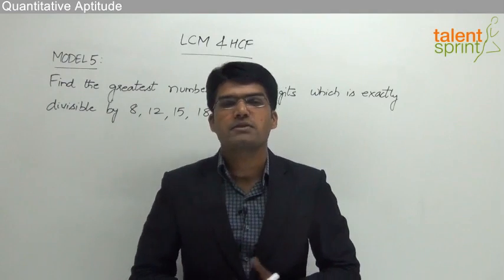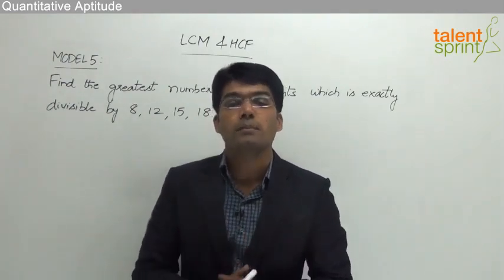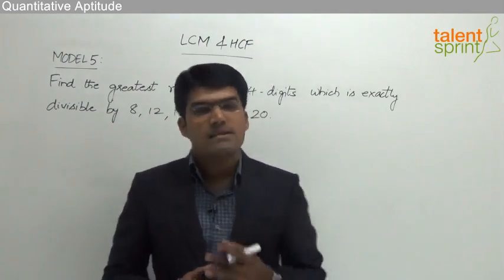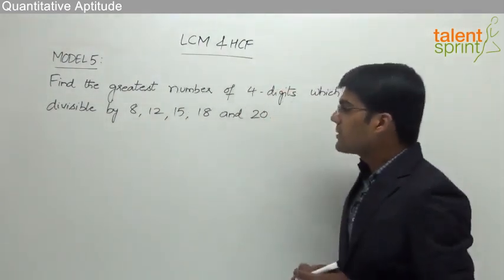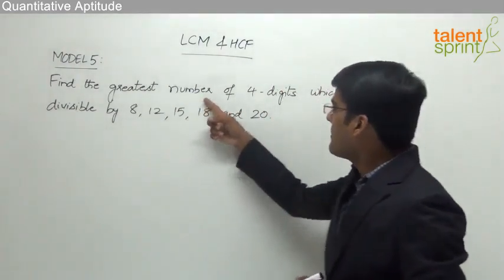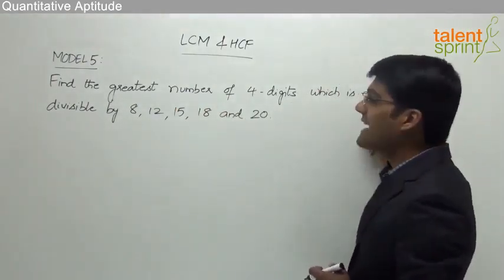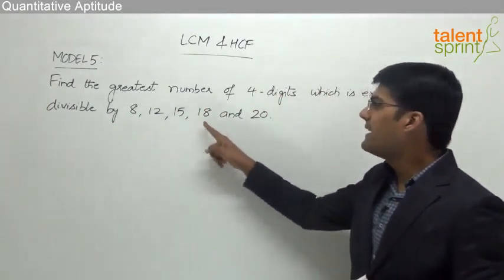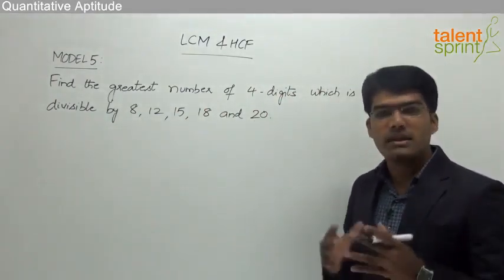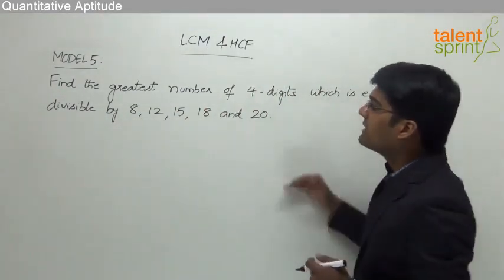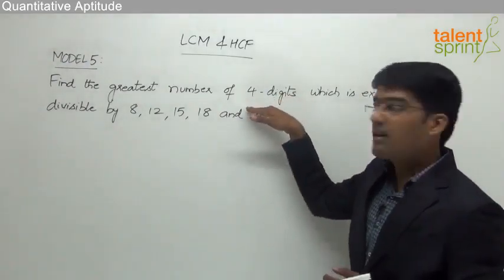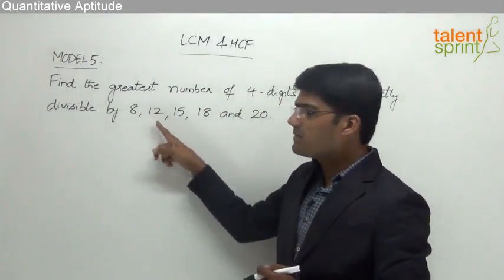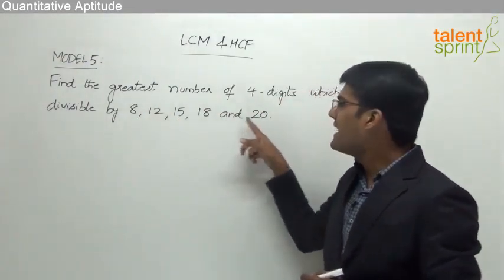Let us now take the fifth model from this topic where we shall take up a very popular question which can be solved using the concept of LCM. The question says: find the greatest number of four digits which is exactly divisible by 8, 12, 15, 18, and 20.